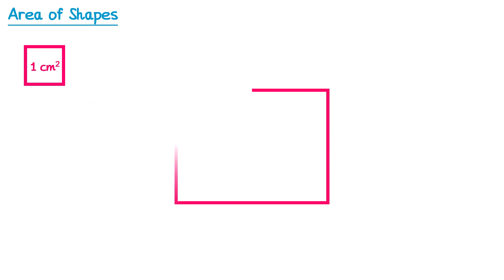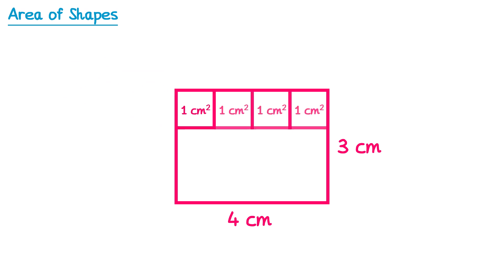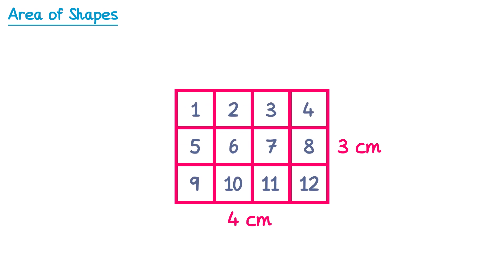If we take this rectangle, which has a base of 4cm and a height of 3cm, to work out its area what we're really doing is asking how many of these 1cm squares we would need to cover up the shape. So let's start covering up the shape with these 1cm squares and see how many we need. In this case, if you count up all of those, you'll find there are 12 squares. So the area of this rectangle is 12cm squared.